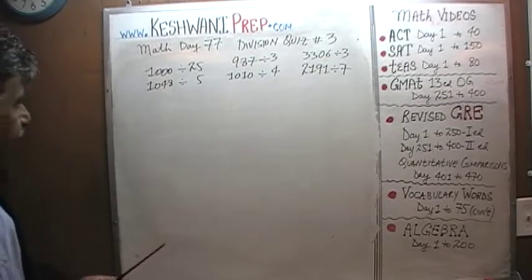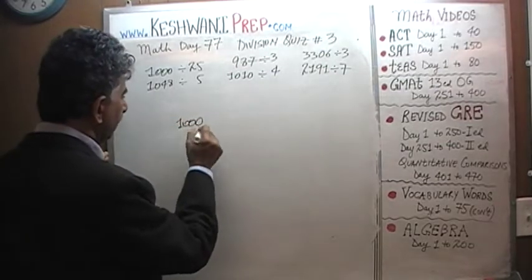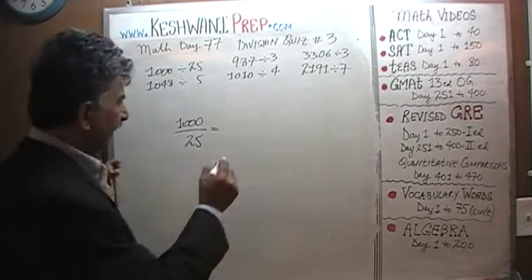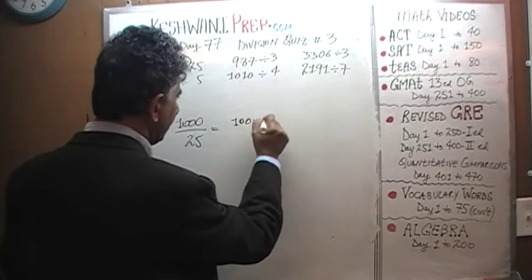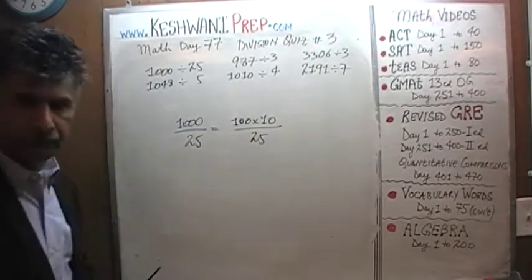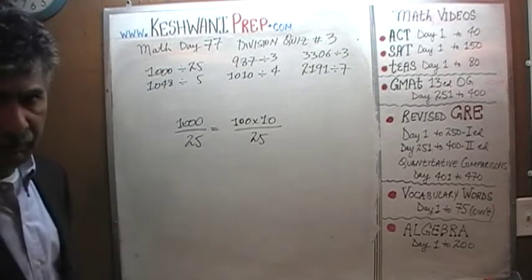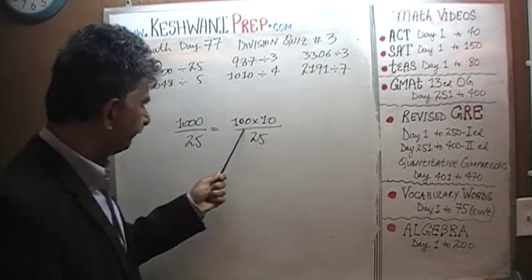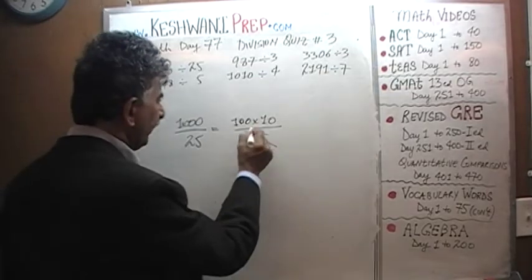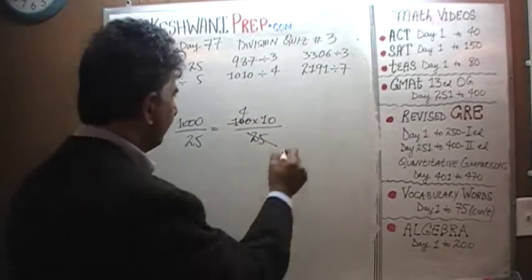Let's begin. 1,000 divided by 25. Write 1,000 as 1,000 — that's 10 times 100 — over 25. It makes life easier. Divide top and bottom by 25: 25 goes away and 100 has 4 twenty-fives. The answer is 40.